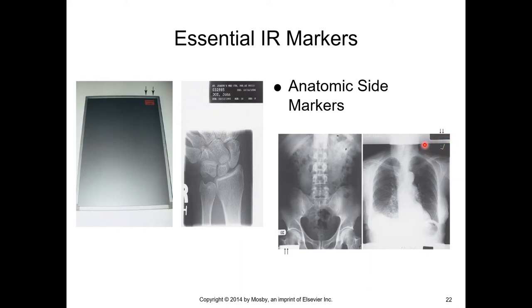This L is backwards because this is a PA chest x-ray. The L was placed on the board in the correct direction and got flipped around when the image was presented on the screen.